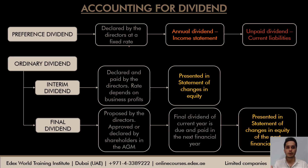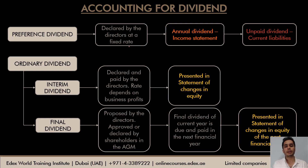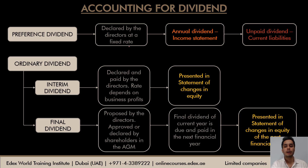Dividends are accounted for on a payment basis only. So dividend of one year is always recorded in the statement of changes in equity of the next financial year when the dividend is actually paid. The proposed final dividend of the current year is ignored and not recorded in the current year's financial statements.